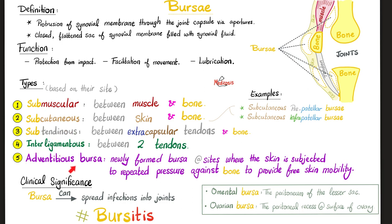And we have adventitious bursa — extra bursa. What's that? Newly formed bursa that did not exist before. Why does it form? It forms because your skin was subjected to repeated pressure against bone in order to provide you with skin mobility. This is the story of the mechanic, the babysitter, etc. — chronic overuse.